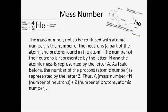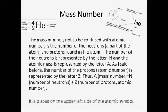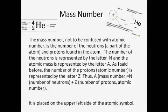equals N, the number of neutrons, plus Z, the number of protons, atomic number. It is placed on the upper left side of the atomic symbol.